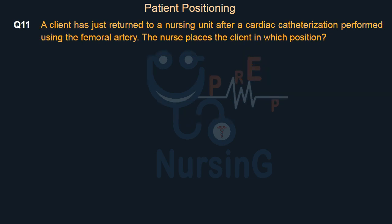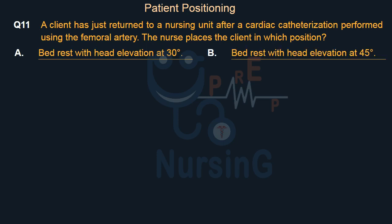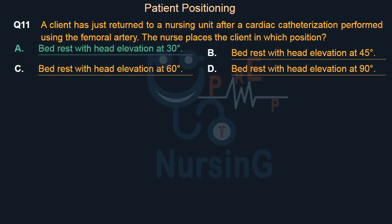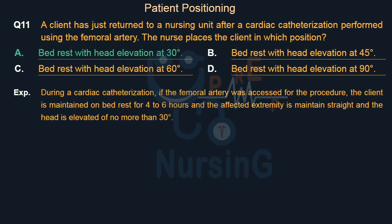A client has just returned to a nursing unit after a cardiac catheterization performed using the femoral artery. The nurse places the client in which position? Option A, bed rest with head elevation at 30 degrees; Option B, at 45 degrees; Option C, at 60 degrees; Option D, at 90 degrees. The right answer is Option A, bed rest with head elevation at 30 degrees. The client is maintained on bed rest for 4–6 hours, the affected extremity is kept straight, and the head is elevated no more than 30 degrees.